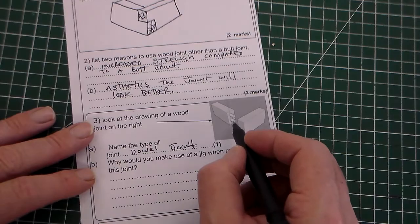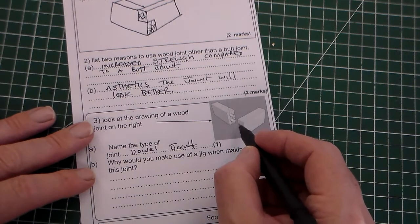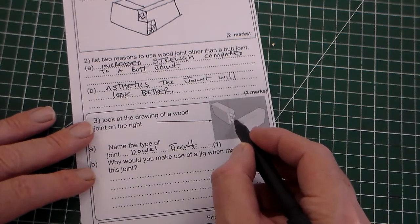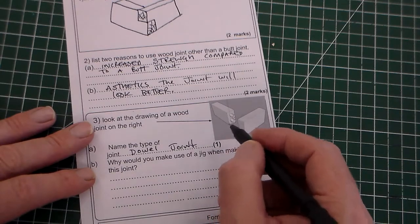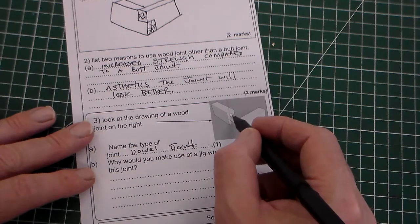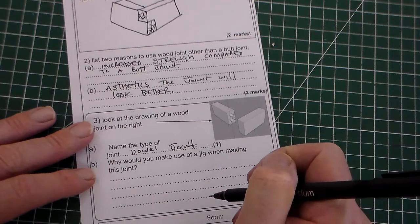A jig is something that helps with repetitive tasks and or helps with accuracy. Obviously, here and here, we've got two holes that need drilling and they need to be the same on that side. So a block of metal here with two holes in it would be called a jig and that would allow you to drill the two holes accurately. Take the piece of metal over onto this and drill the two holes so that these holes, the dowels, line up with the holes opposite. That makes sense.